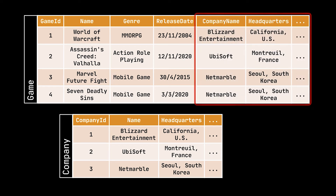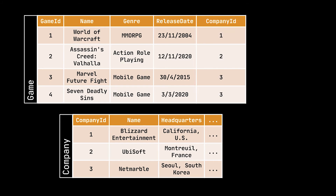But how are we going to represent this relationship between our game table and our company table? We could add all the relevant information of a company next to each game, however that would be duplication. What we can do instead is add the corresponding company ID next to our game in the game table.